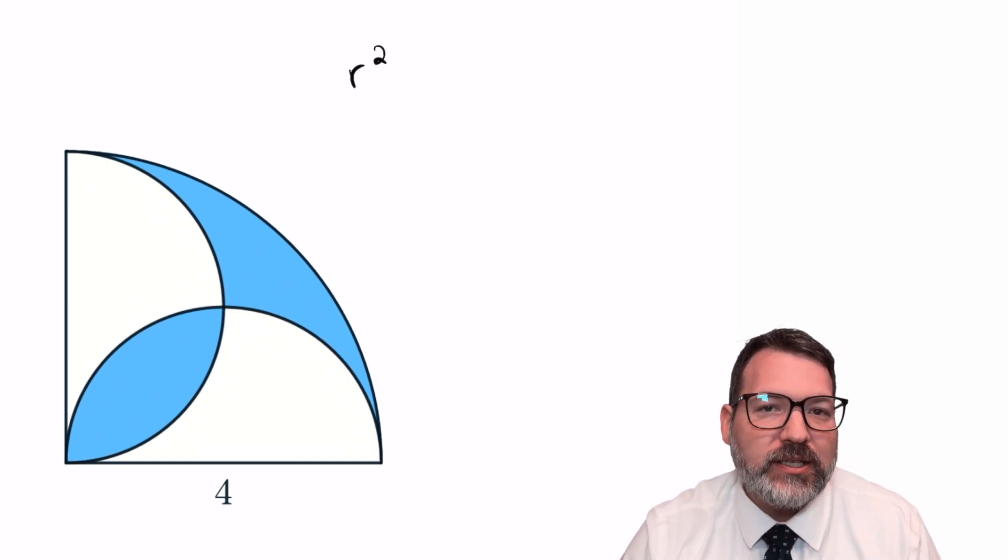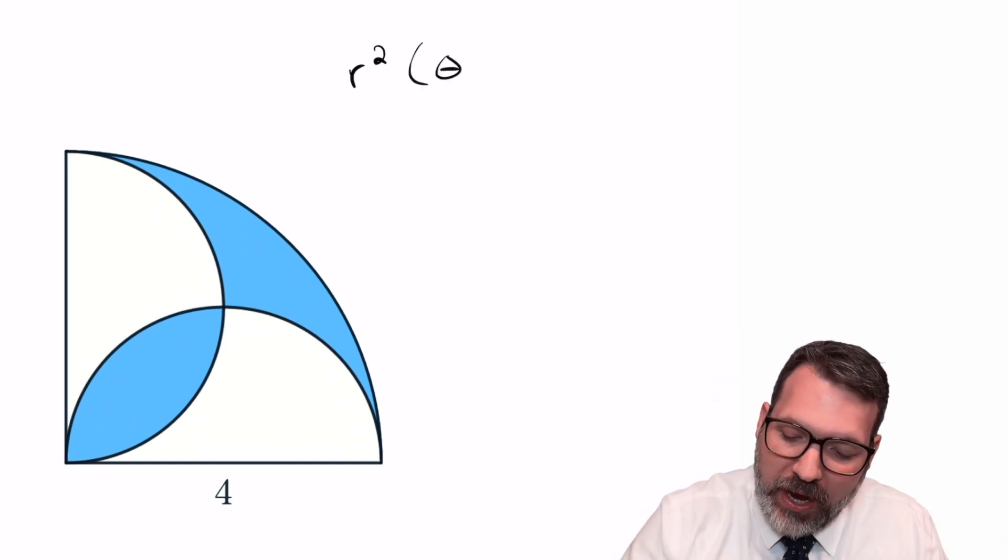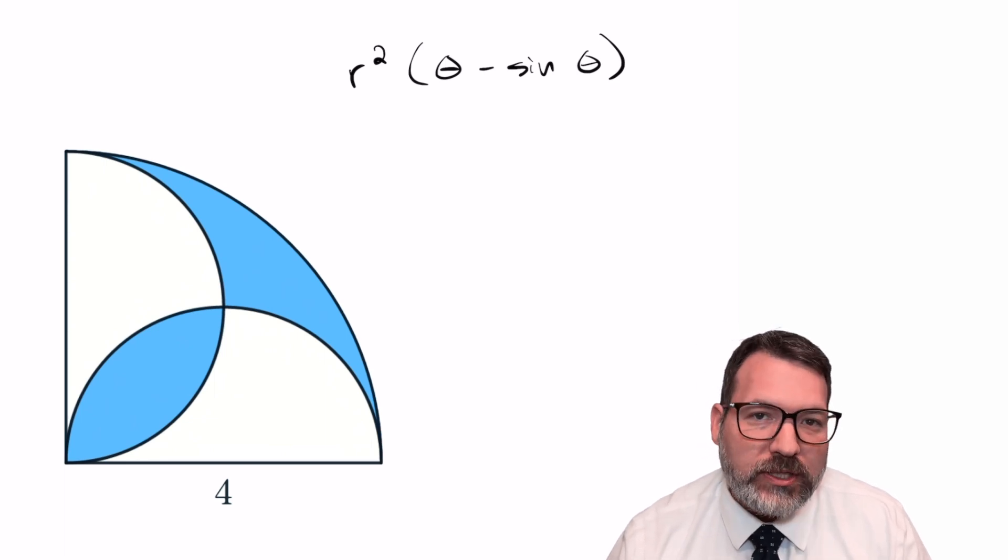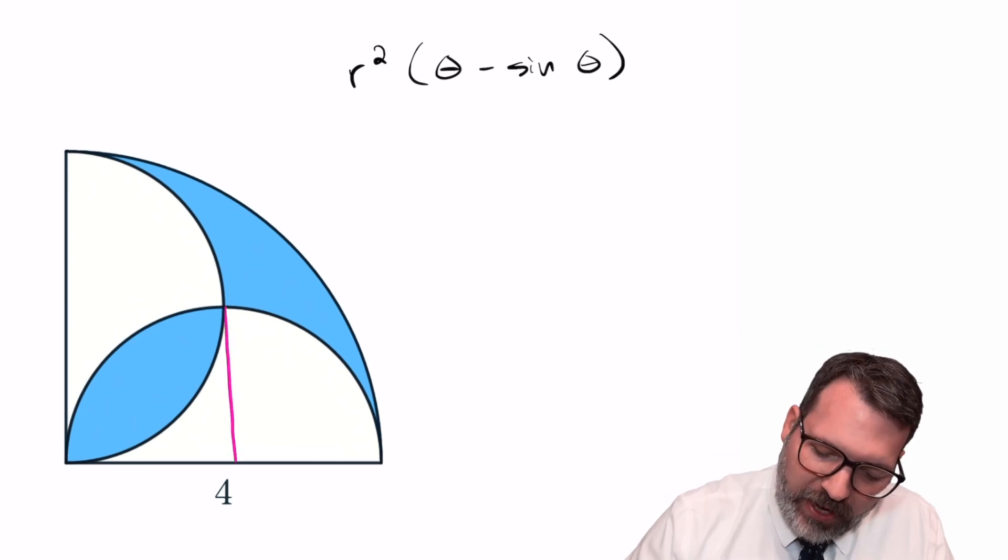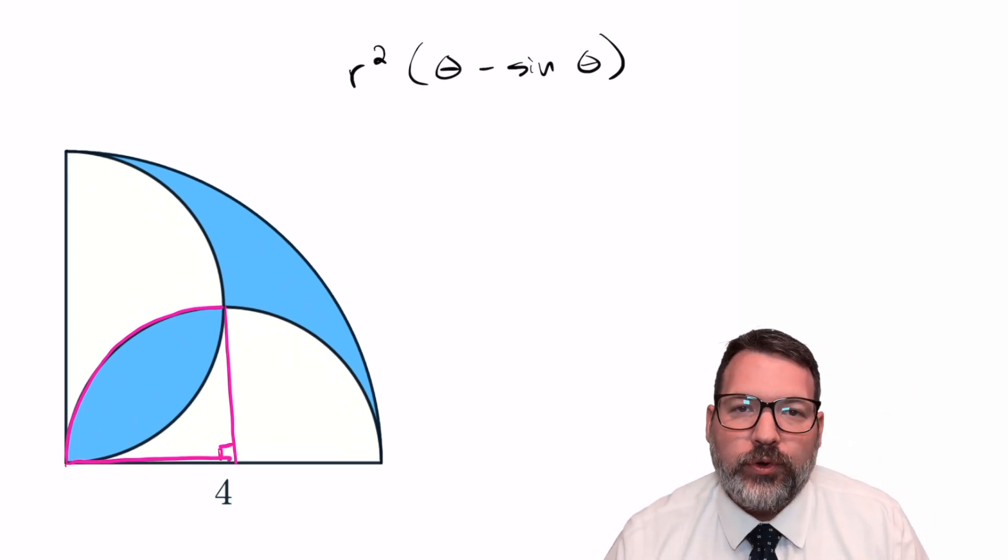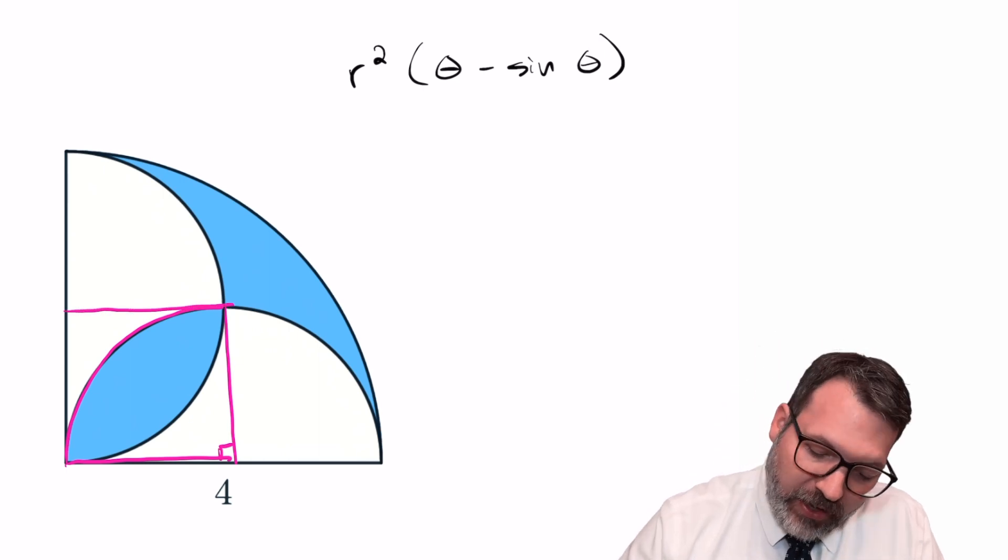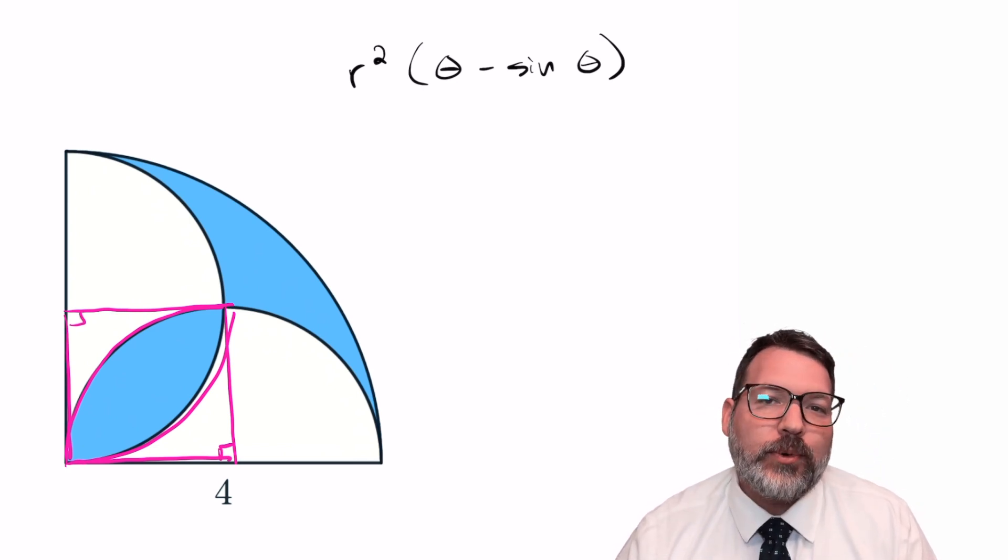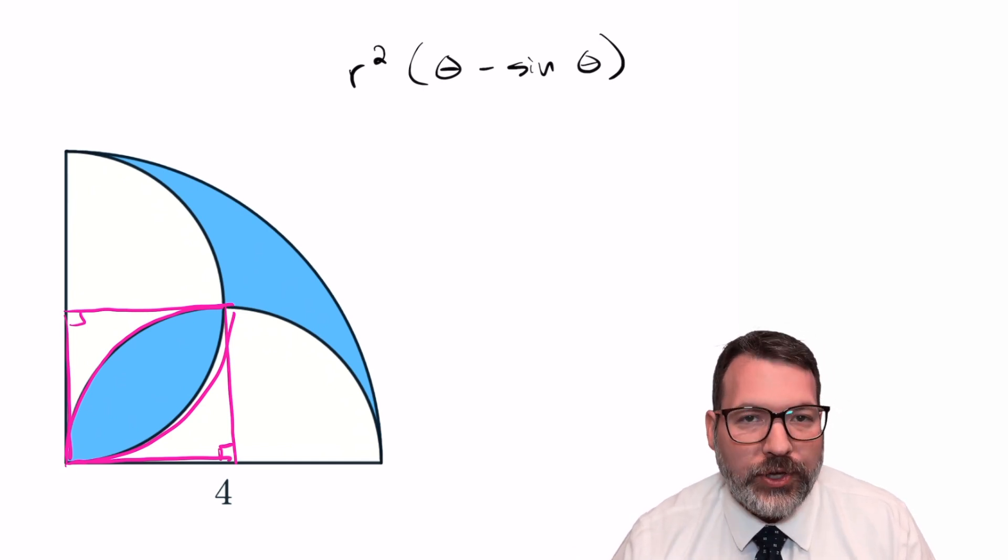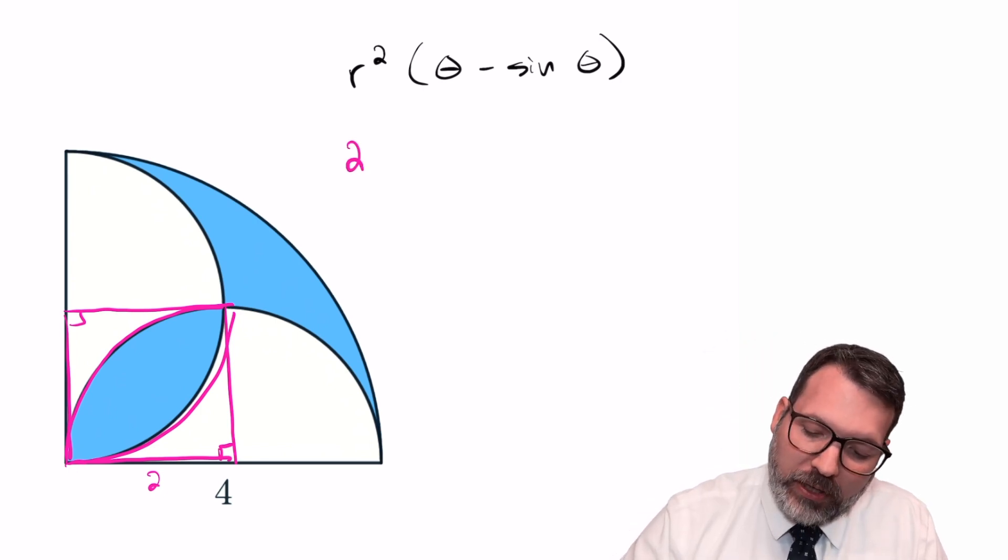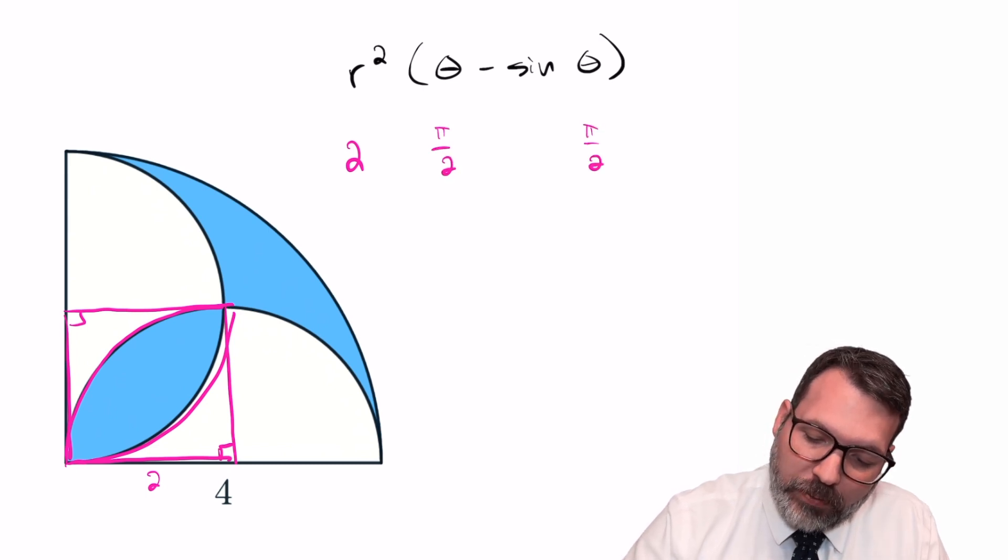R squared, that is the radius of the circle that kind of incorporates that lens, times theta minus sine theta. Now, the theta in question here is basically what portion of a circle intersects to make this particular lens. Here, for example, if I encase that kind of football-shaped region in its own circle, I can see it's taking up 90 degrees of a full circle. That's where I'm getting the intersection on the other side that creates the football-shaped region. So my theta is going to be 90 degrees, though in the context of this formula, I'm going to need to use radians, meaning I'm actually going to use pi over 2.